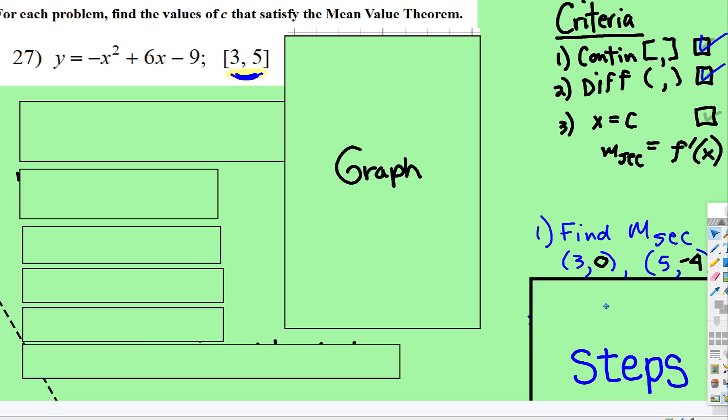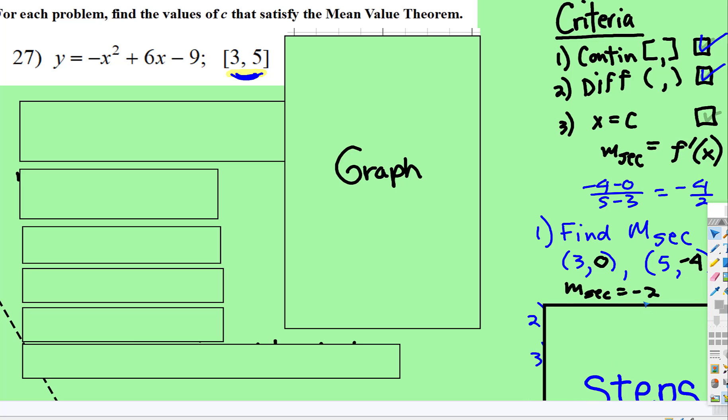Find the secant. Find the two points: plug 3 into this polynomial, you get 0. Plug 5 into that polynomial, you get -4. Then find the slope of the secant: -4 - 0 over 5 - 3, and you get -4/2. The slope of the secant line will be -2.